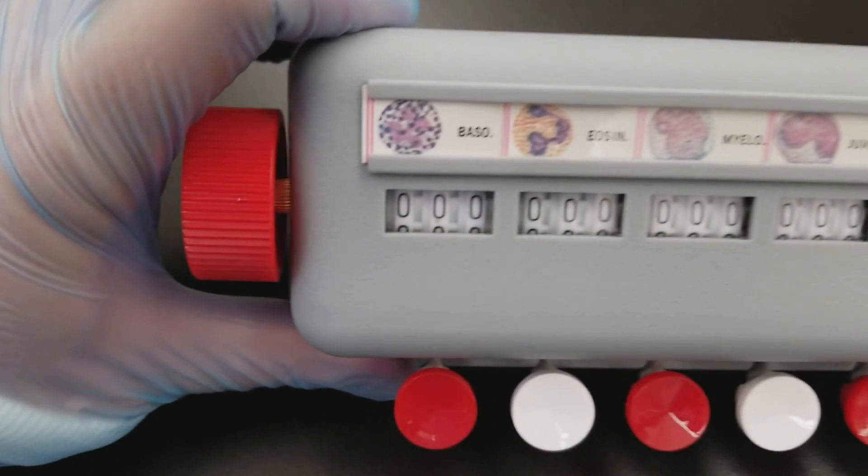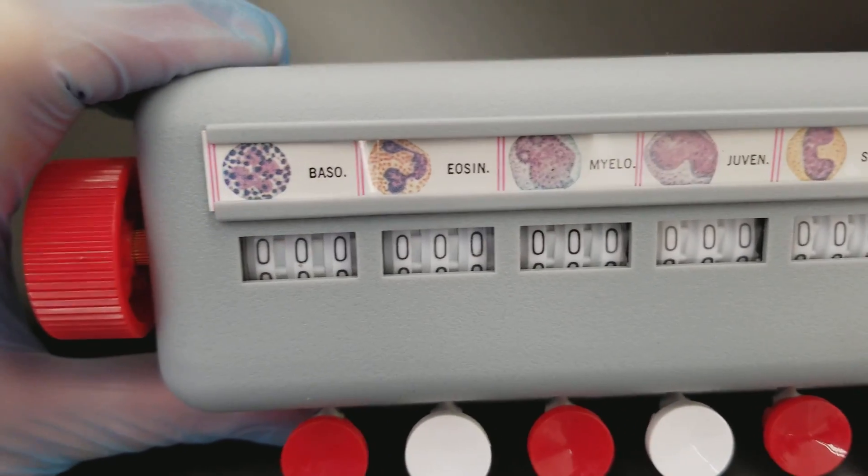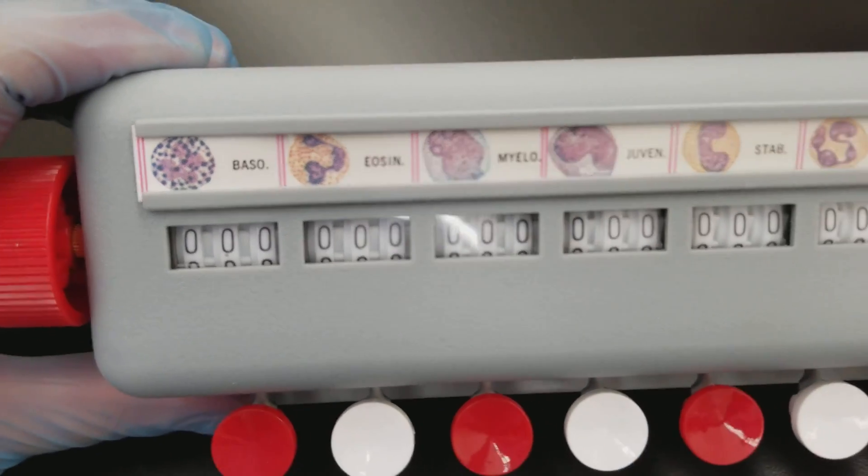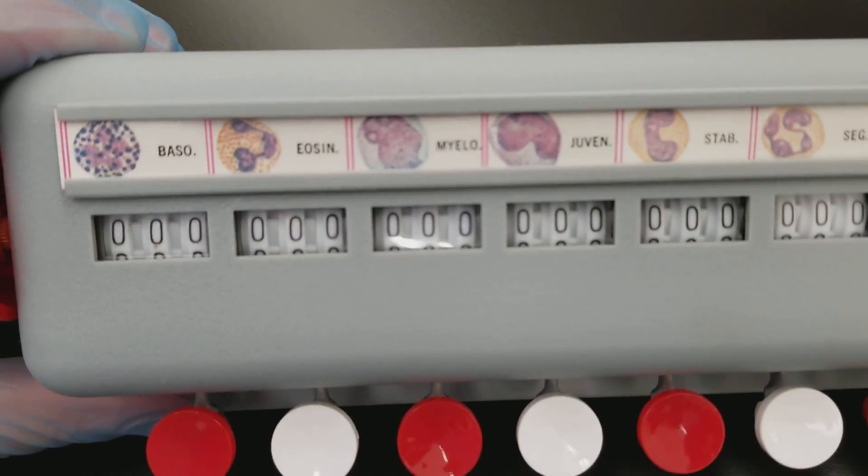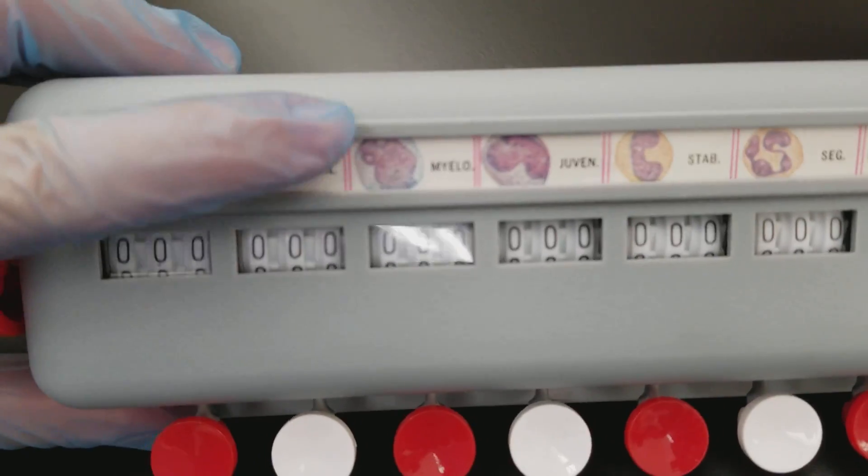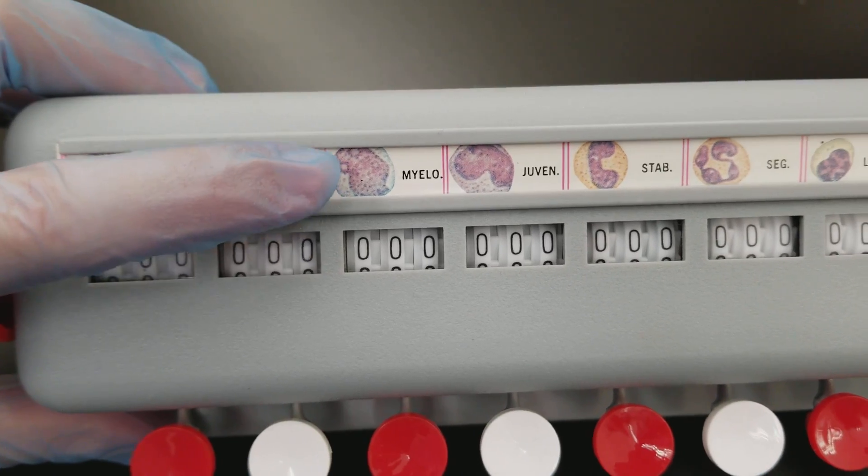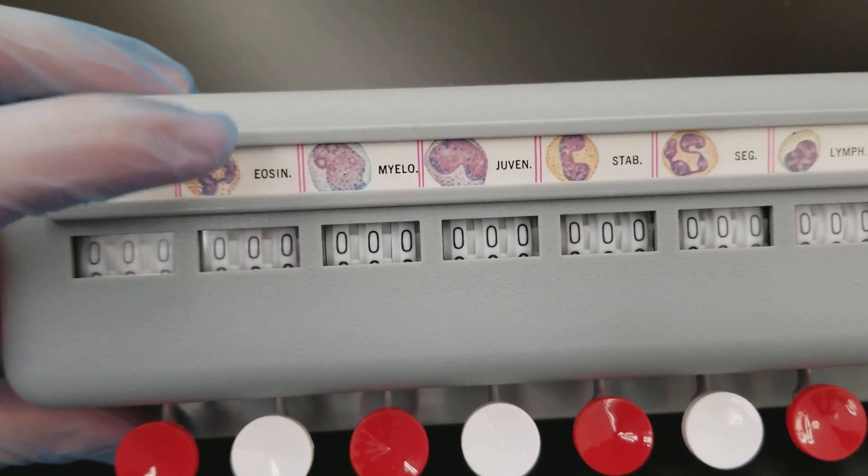So you have the basophils here. It gives you a beautiful picture of what they look like. The eosinophils, we have myelocytes here where you can see that they've got the nucleoli and the nucleus and a little bit of granulation there.